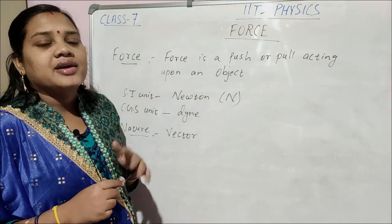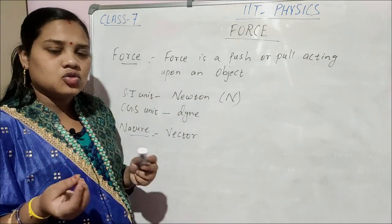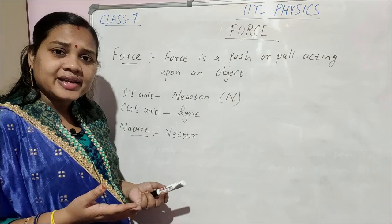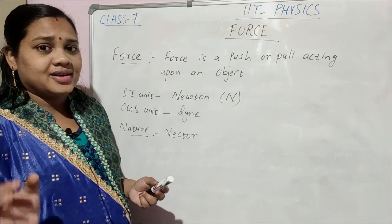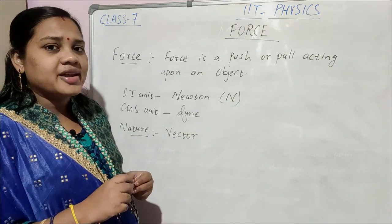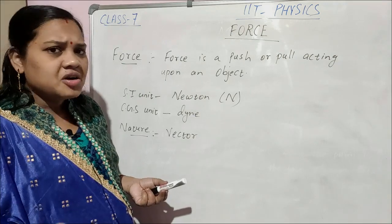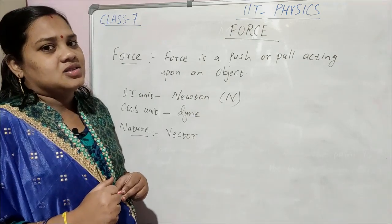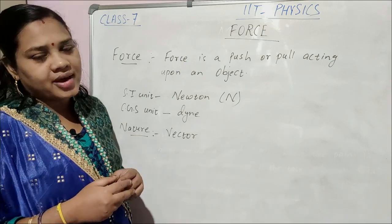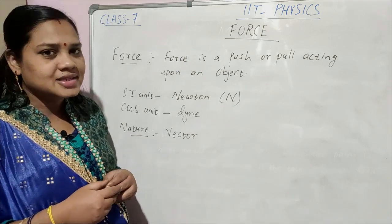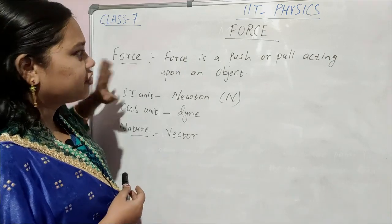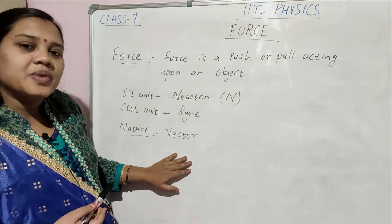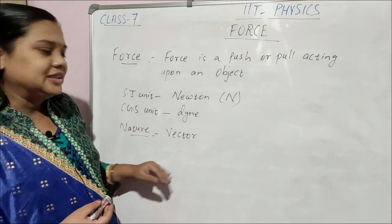Then only it is a vector quantity. There are some quantities which have direction but are not vectors, like electric current. Electric current has direction but it is not a vector quantity because it does not obey the laws of vector addition. Force, however, is a vector quantity because it obeys the laws of vector addition.